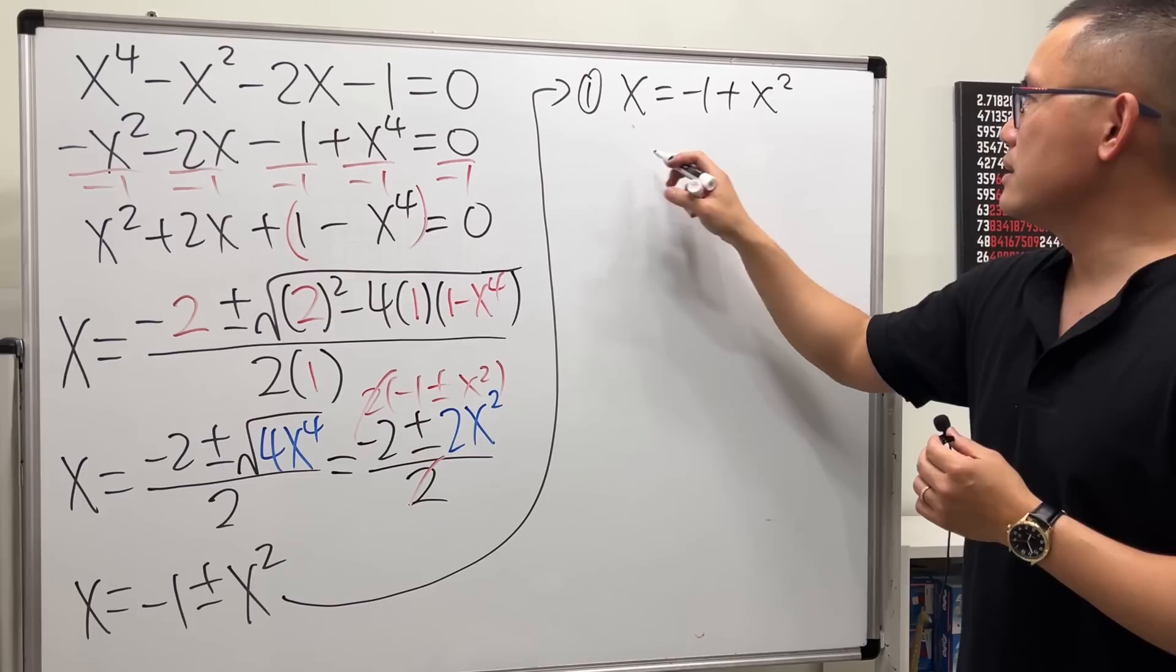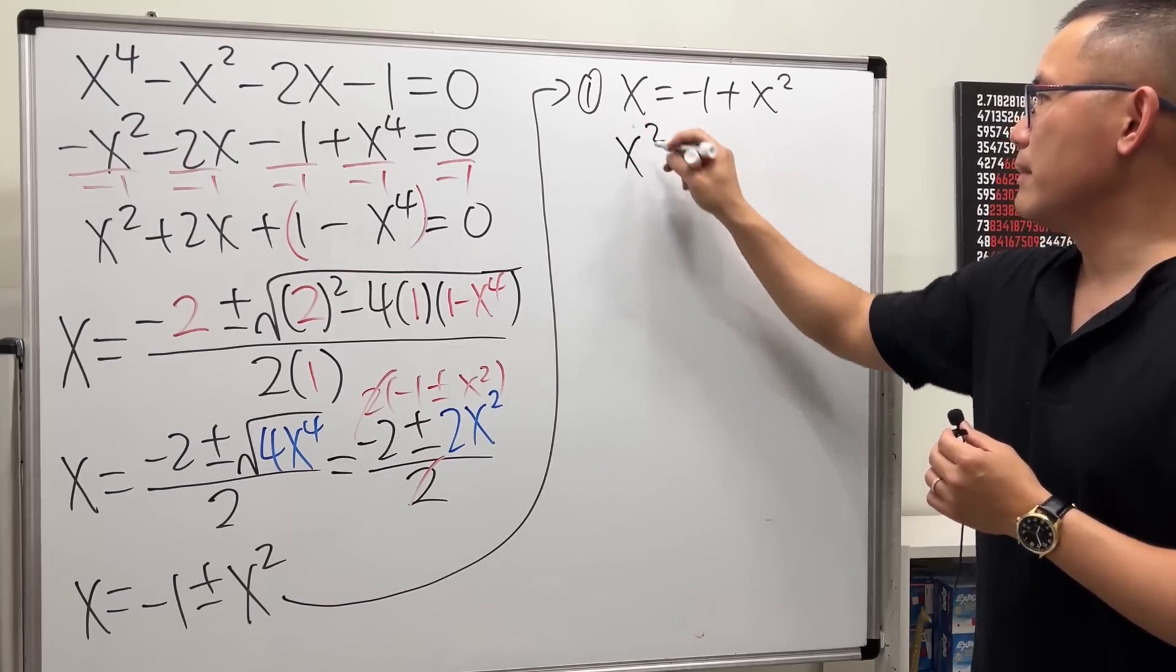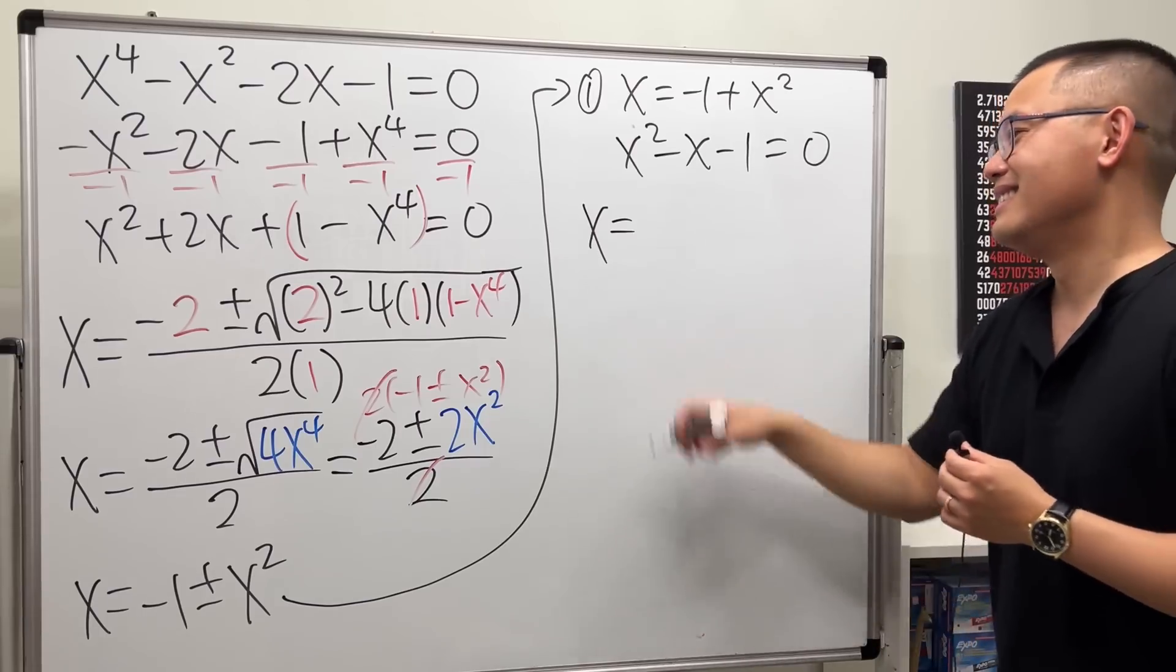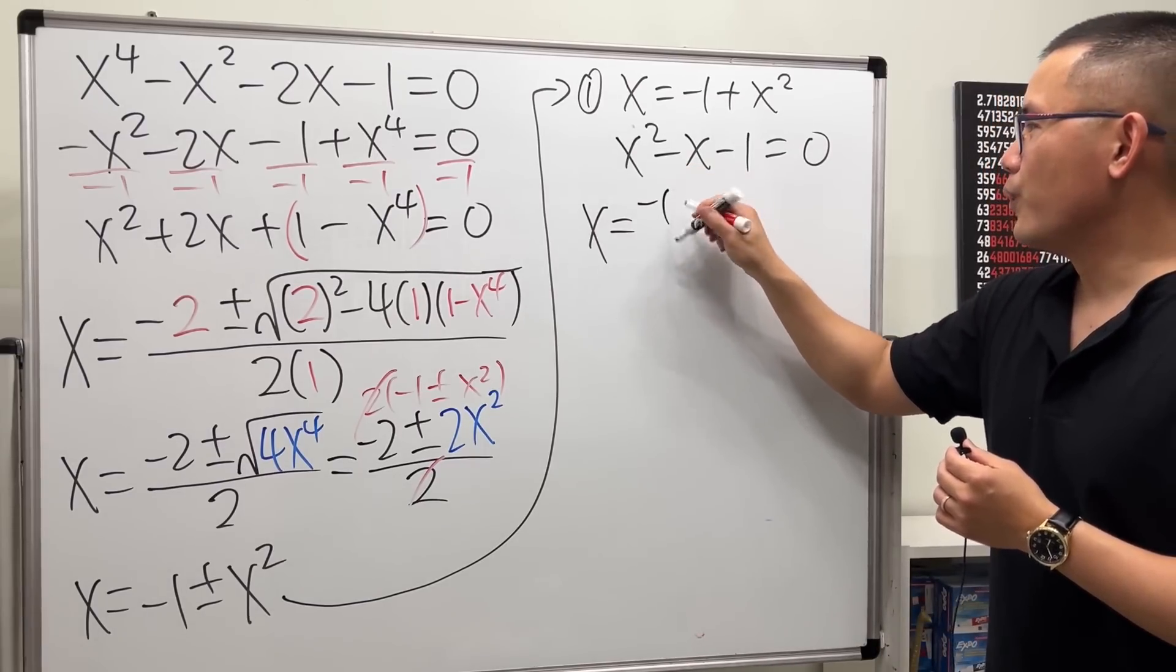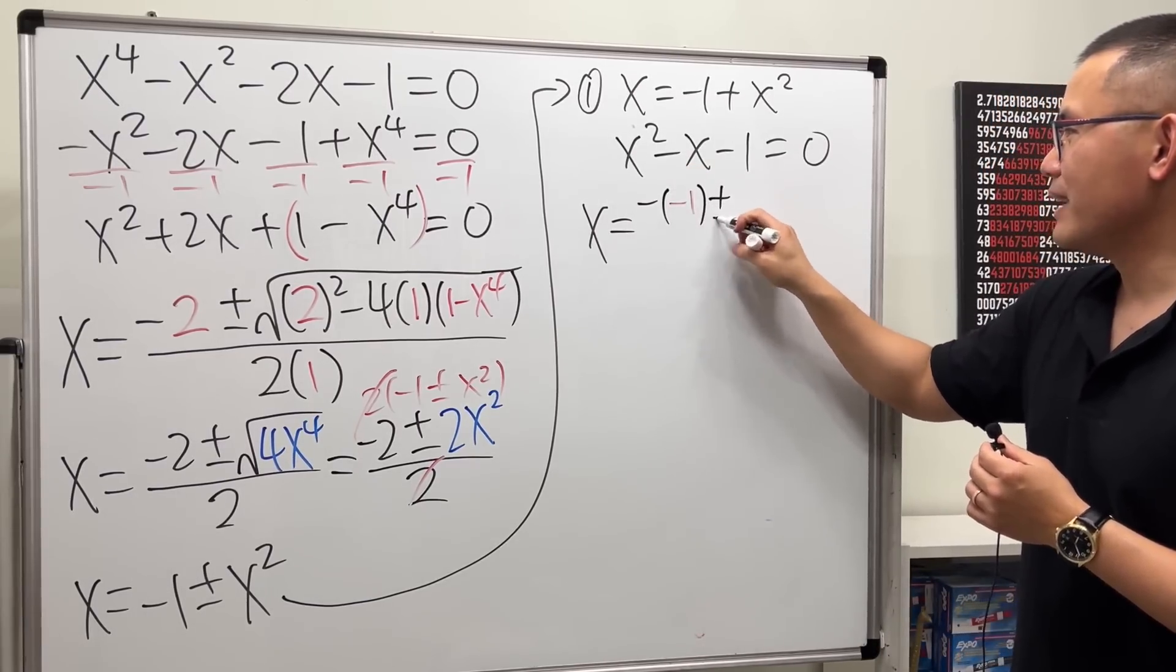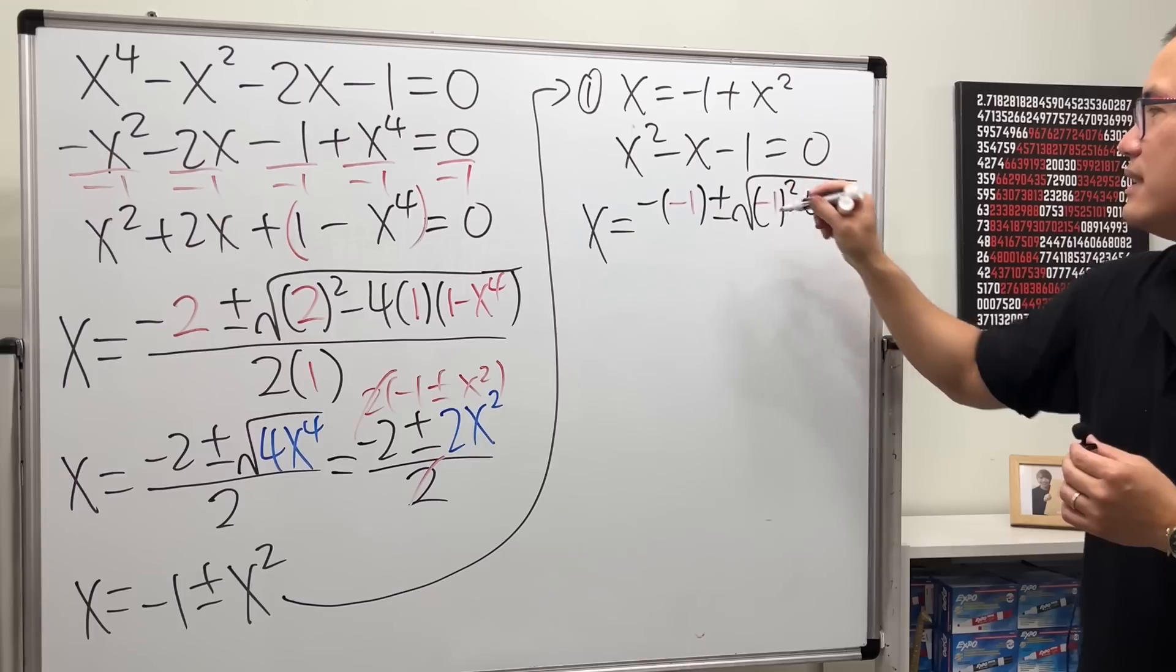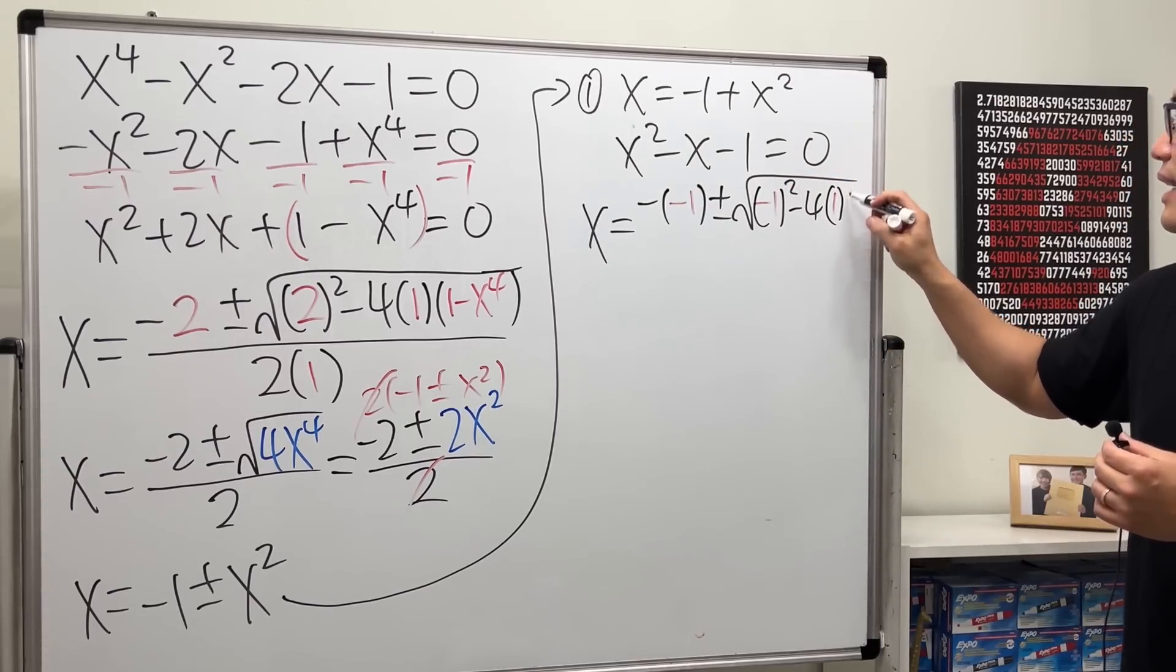Move the x to the other side, we get x square and then minus x and then minus 1 equal to 0. Quadratic formula again: negative 1 plus or minus, and then negative 1 square minus 4ac, so 1 and negative 1.